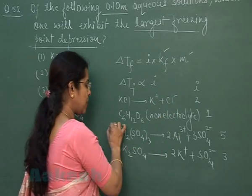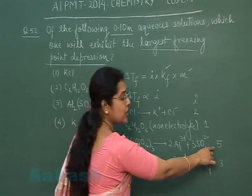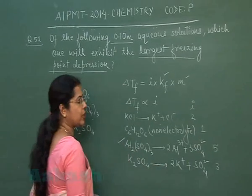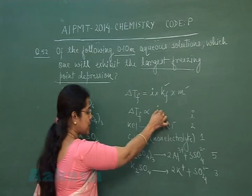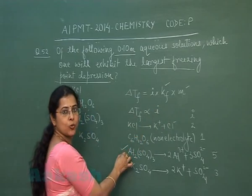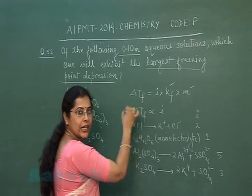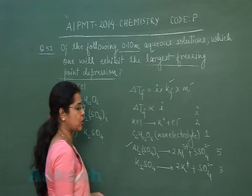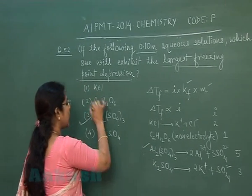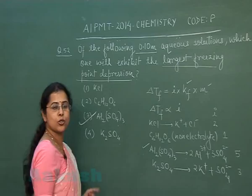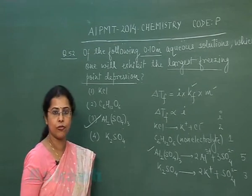Among all four options, the maximum number of particles is present in aluminium sulfate. Since the van't Hoff factor i is maximum for aluminium sulfate, the value of ΔTf will also be maximum for it. So the correct answer is option 3, aluminium sulfate.